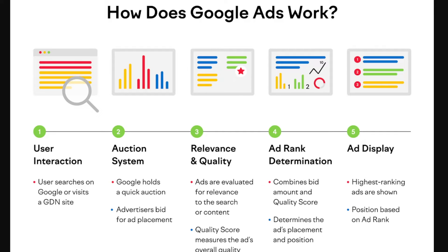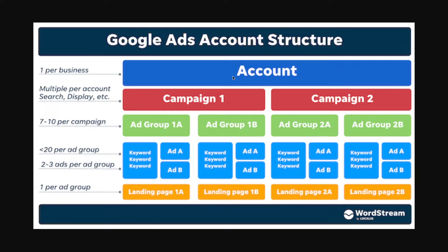Now that we have a basic understanding of how Google ads works, we can take a look at the Google ads account structure. At the very top, we have our Google ads account — usually one per business. Once you have your ad account, the next step is to create a campaign, and you can have multiple campaigns. Within these campaigns, you have something called ad groups — generally about seven to ten per campaign — which help you divide campaigns into specific niches. So if my campaign is about selling t-shirts, those ad groups could be red t-shirts, blue t-shirts, green t-shirts. Within these ad groups, you have specific ads.